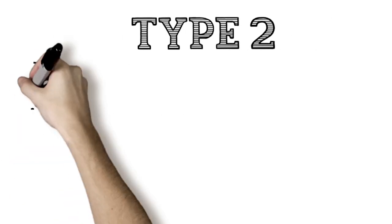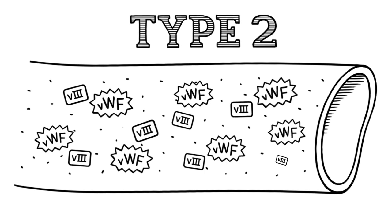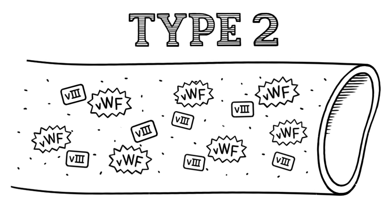In type 2 VWD, the body makes normal amounts of Von Willebrand factor but it does not work the way it should. There are four different subtypes of type 2 VWD.